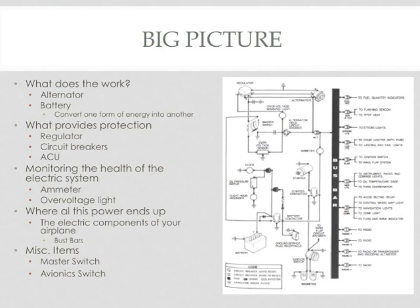If none of that made sense, just remember this: voltage regulators and alternator control units protect by regulation, whereas circuit breakers protect by expulsion — physically removing a component from the electrical system.